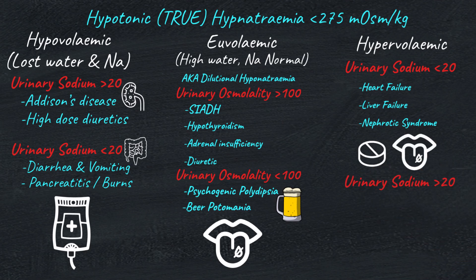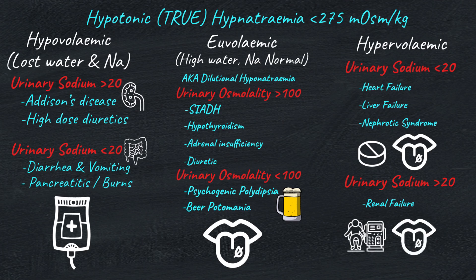If the urinary sodium is more than 20, this simply means the kidneys are shutting down and sodium is leaking out of the failing kidneys. Treatment is dialysis along with fluid and sodium restriction. Please remember that this is the general workup and management of asymptomatic hyponatremia. Symptomatic hyponatremia management is very different and can be a medical emergency. If you give fluids, don't correct sodium too quickly — follow your hospital's local guidelines, as rapid correction can cause fatal complications such as osmotic demyelination syndrome, or ODS.